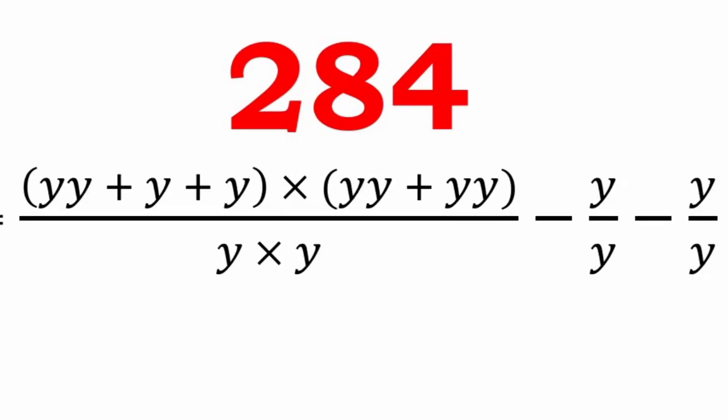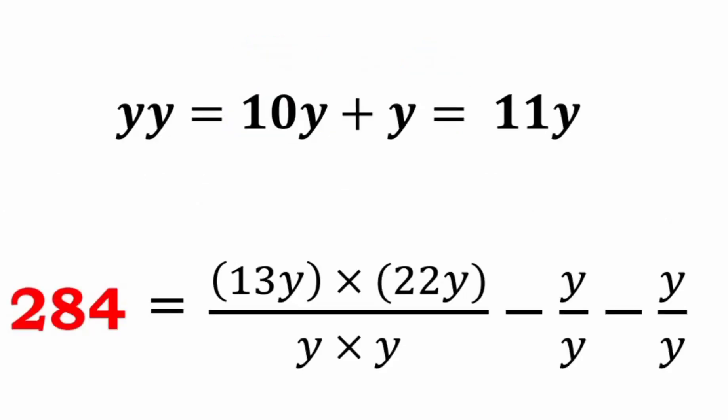Following the single-digit representations using 1 through 9, we can see the general format of representing 284 using any digit y, where y is 1, 2, 3, 4, 5, 6, 7, 8, or 9: (yy plus y plus y into yy plus y) whole divided by (y into y minus y/y minus y/y). Here yy is a two-digit number, which we can write as 10y plus y, equal to 11y.